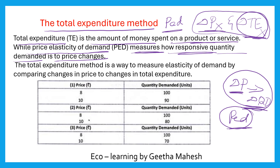Price elasticity of demand can be greater than 1, less than 1, or equal to 1.